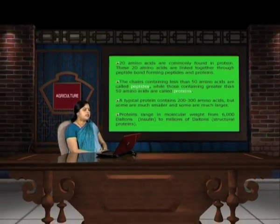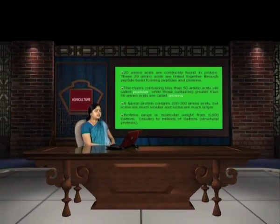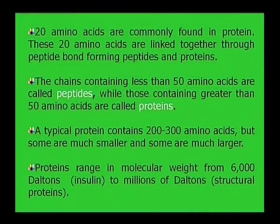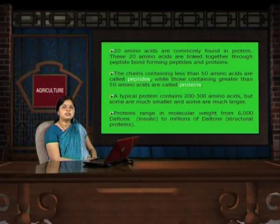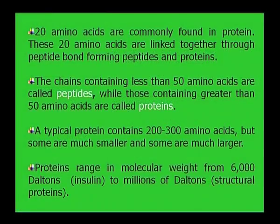The chain containing less than 50 amino acids are called peptides, while those containing greater than 50 amino acids are called proteins. This is the difference between the peptides and proteins. A typical protein contains 200 to 300 amino acids, but some are much smaller and some are much larger.